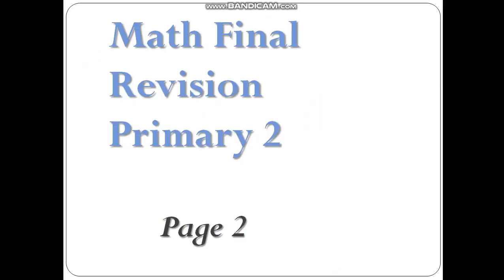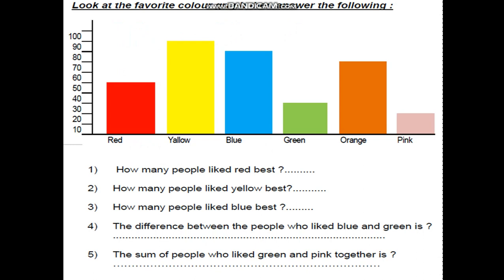Open page 2 in your final revision sheet and solve with me. Look at the favorite color graph then answer the following. We will use the ruler and write the number. Red — it's 50. Yellow — put the ruler and see where it ends. It ends at 90, so the answer is 90.